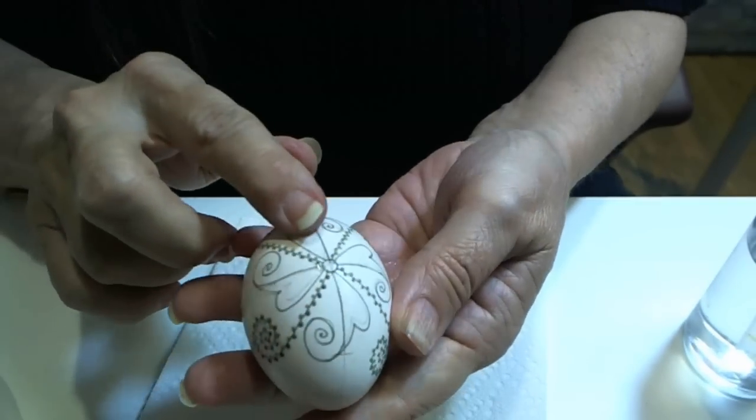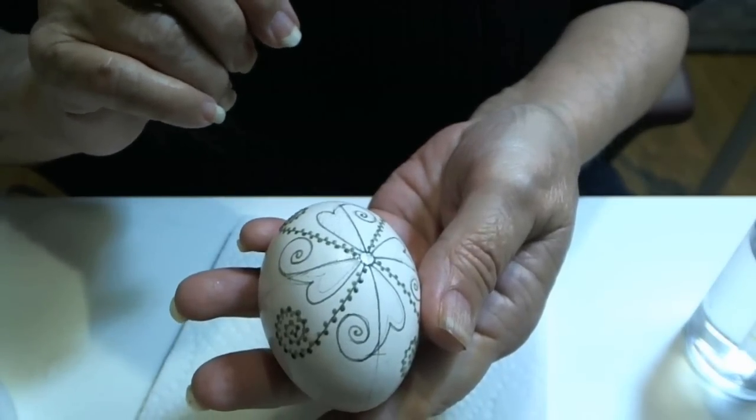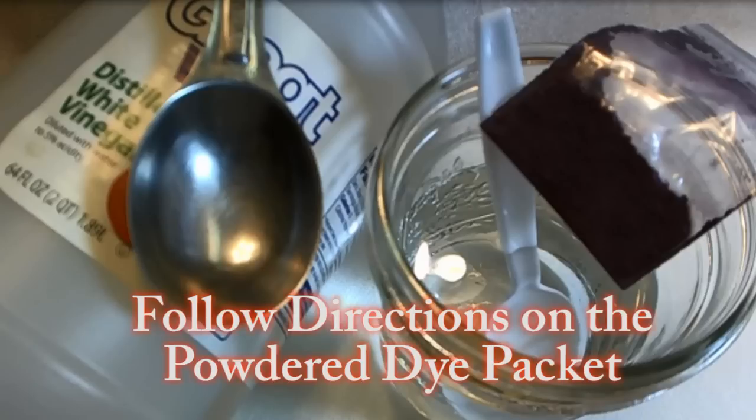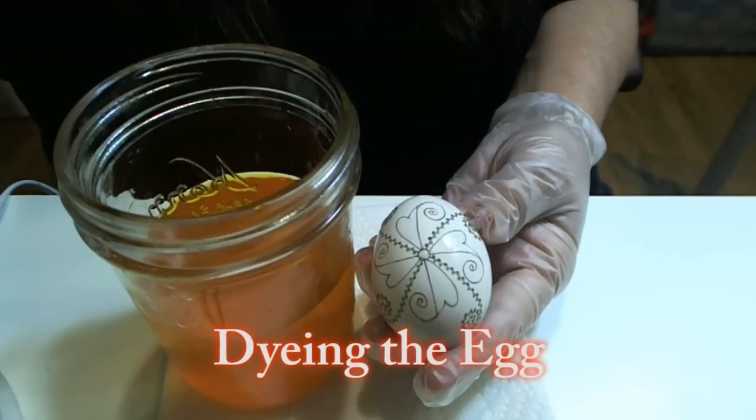We will stir dye into our boiling water, and then we will add a tablespoon of vinegar. Now we're ready to put our egg in the first dye.